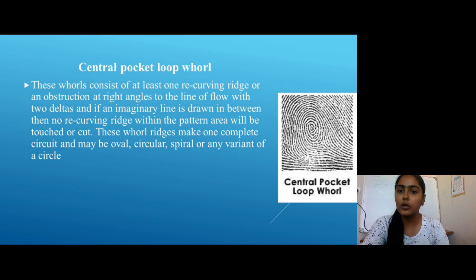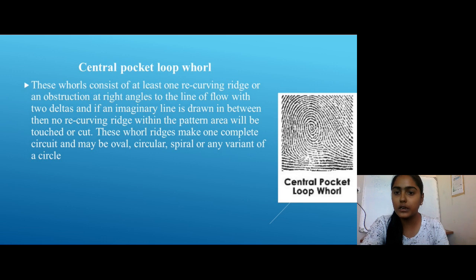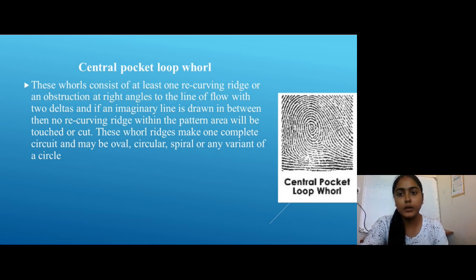The second subcategory is Central Pocket Loop Whorl. This whorl consists of at least one recurring ridge or obstruction at right angles to the line of flow, with two deltas. If any imaginary line is drawn between the deltas, no recurring ridge within the pattern area will be touched or cut. The ridges may make one complete circuit and may be circular, spiral, or any variant.